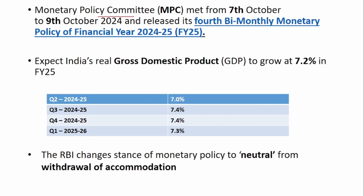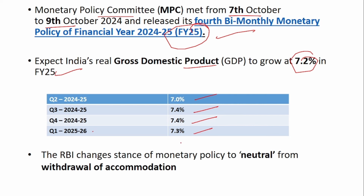The MPC committee met from 7th October to 9th October and released the fourth bi-monthly monetary policy of the financial year FY25. It is expected that the real GDP will grow at 7.2% for FY25 — Q2 at 7%, Q3 at 7.4%, Q4 at 7.4%, and Q1 of FY26 is expected to grow at 7.3%. RBI changes the stance of monetary policy to neutral from withdrawal of accommodation, meaning it can either increase or decrease the repo rate depending upon inflation and growth.